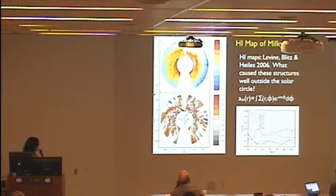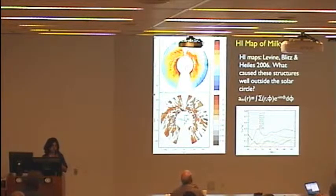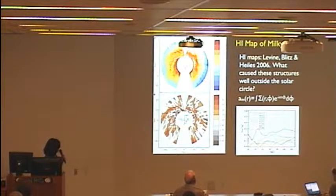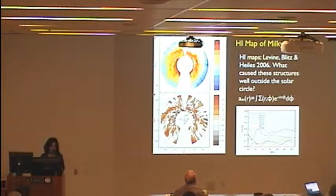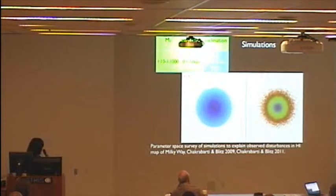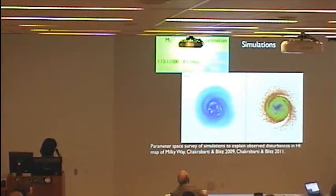I got started on this when I was a postdoc at Berkeley several years ago, when Leo Blitz showed me this H1 map of the Milky Way. You can see large perturbations in the gas surface density which can't be explained in a purely isolated context. I'm showing here the Fourier amplitudes of the projected gas surface density relative to the equilibrium as a function of radius. The lower amplitudes relative to equilibrium are quite large — 20 to 30% — well outside the solar circle, which can't be explained in a purely isolated context. So we asked the question: what caused these structures?